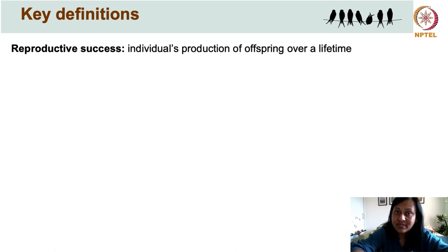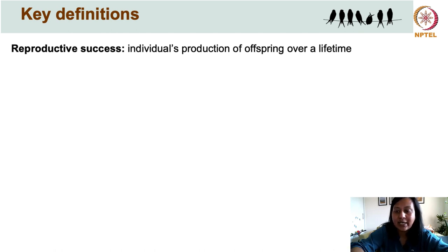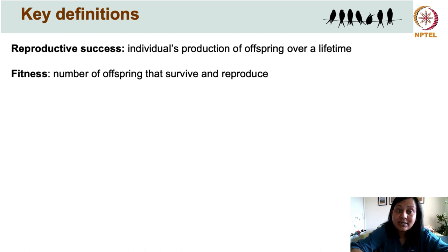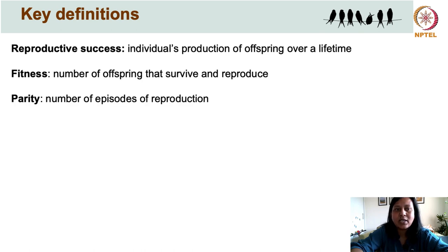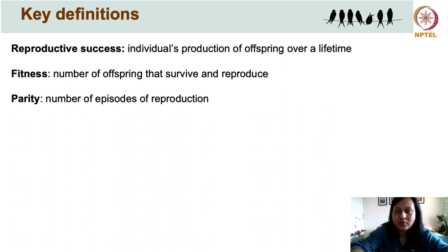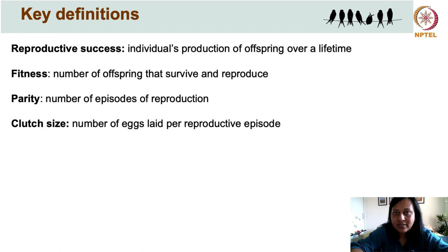I'll begin with reproductive success, which refers to an individual's production of offspring over a lifetime. Fitness refers to the number of offspring that go on to survive and reproduce themselves. Parity defines the number of episodes of reproduction that an adult individual goes through. Clutch size refers to the number of eggs laid per reproductive episode in the case of birds.